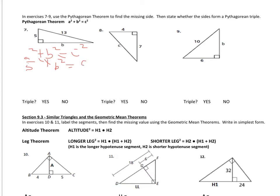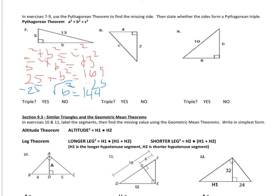We have 5² + b² = 13². That's 25 + b² = 169. Subtracting 25 from both sides: b² = 144. Taking the square root: b = 12. The missing side is 12. Since it's a perfect square, yes, it is a Pythagorean triple.